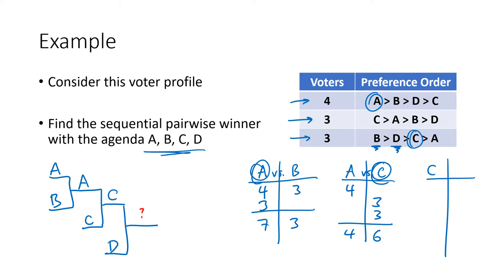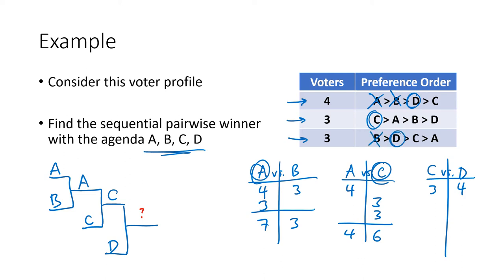Finally we have a C versus D matchup. Looking at the first row of our table, they can't vote for A or B, so the four votes go to D. The three voters in the second row have C as their top choice, so they vote for C. The third row also can't vote for B, so those three votes go to D. D wins seven to three, making D the final winner of this sequential pairwise voting election.